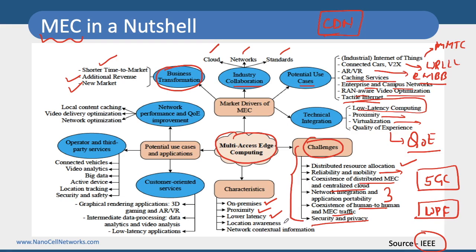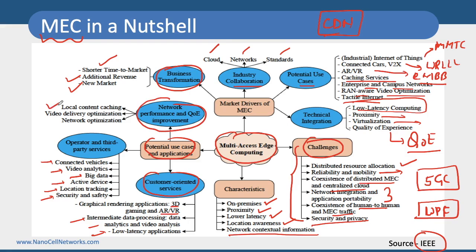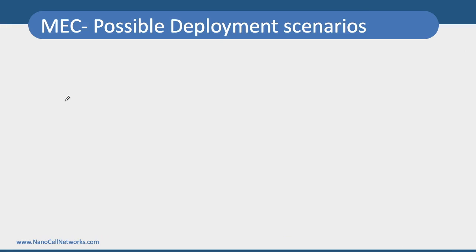Key characteristics of MEC include on-premises deployment, proximity to the end user to reduce latency, location awareness to provide location-based services, and network context information. The potential use cases fall into three categories: customer-oriented services such as 3D gaming, AR/VR, data processing, and low-latency applications; operator and third-party services like connected vehicles, video analytics, big data, location tracking, and security; and network performance services including local content caching, video delivery optimization, and network optimization.